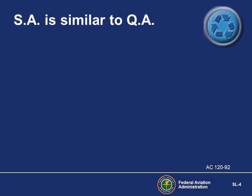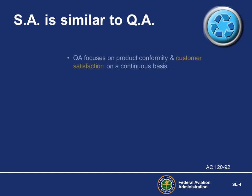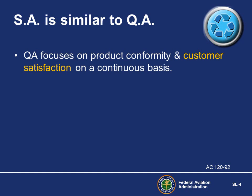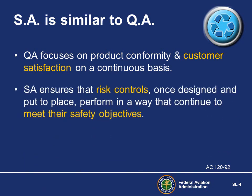Safety Assurance is often confused with Quality Assurance. In truth, they both use many of the same principles and practices. Quality Assurance focuses on continually controlling product conformity and customer satisfaction, such as meeting production goals. Safety Assurance functions ensure that risk controls perform in a way that continues to meet their safety objectives.